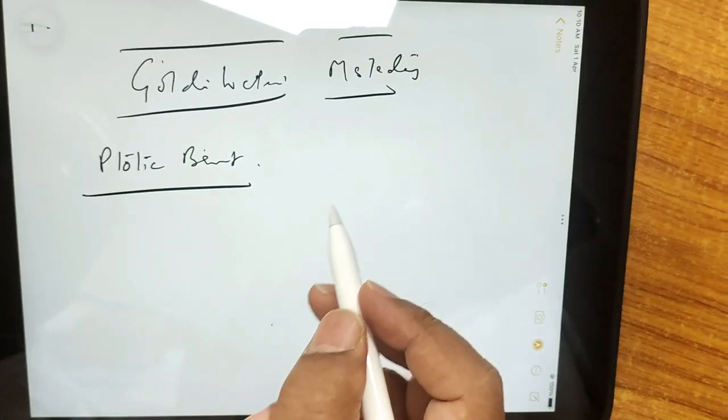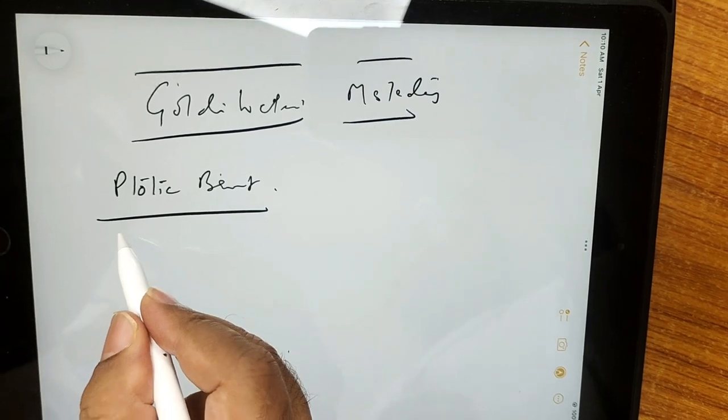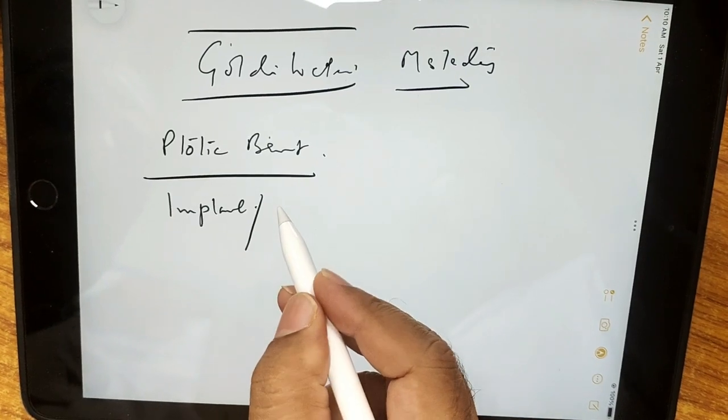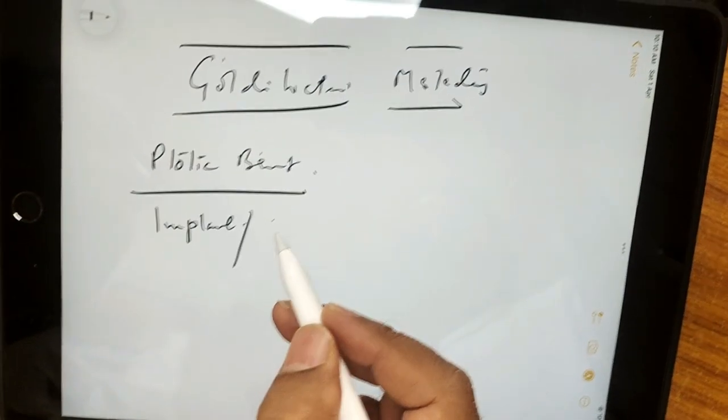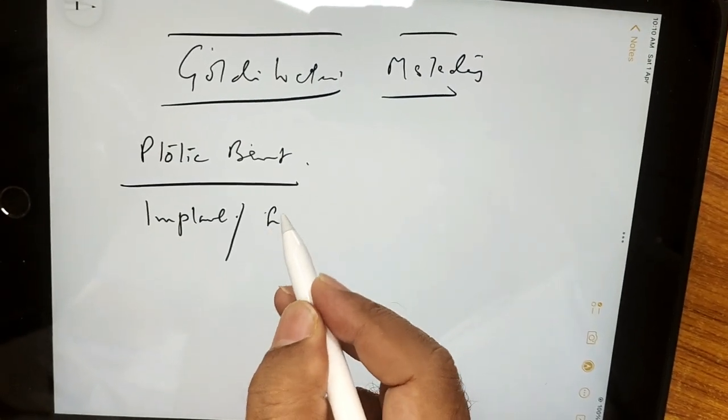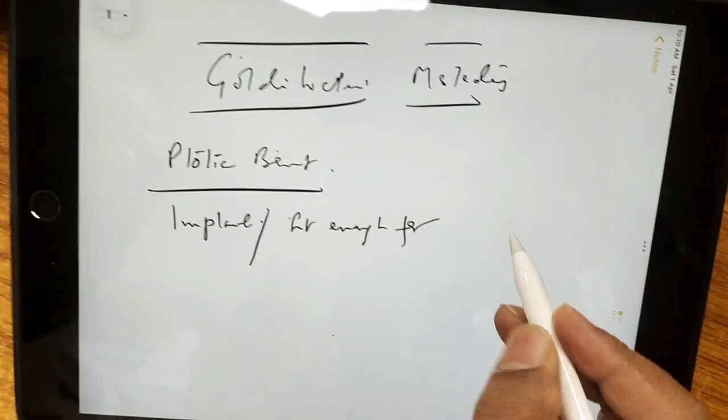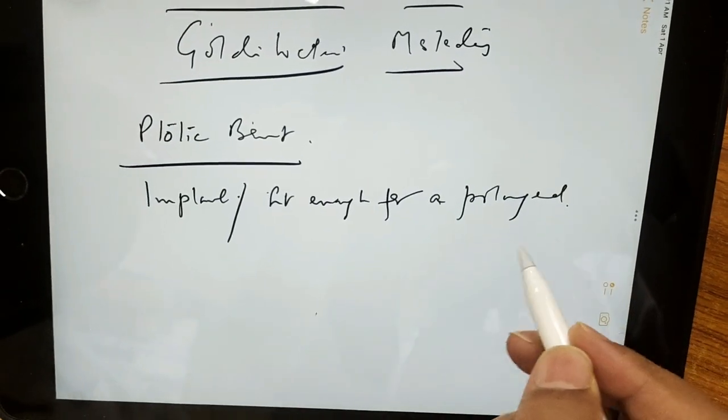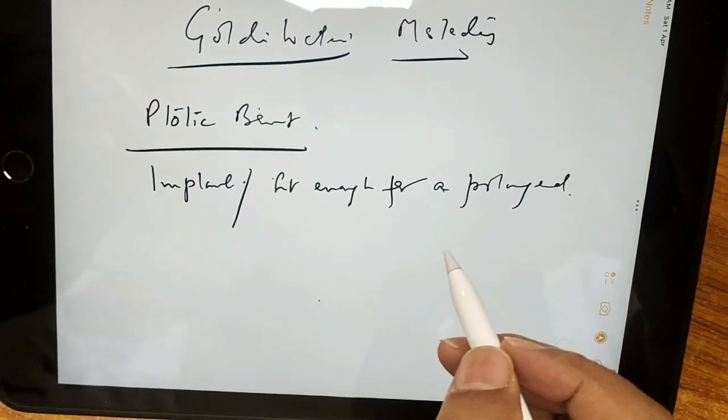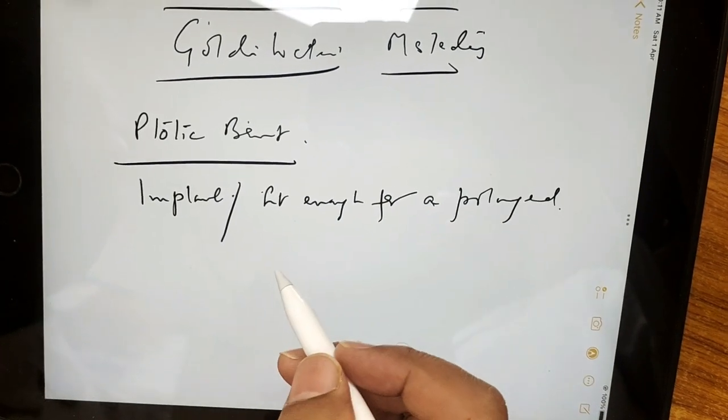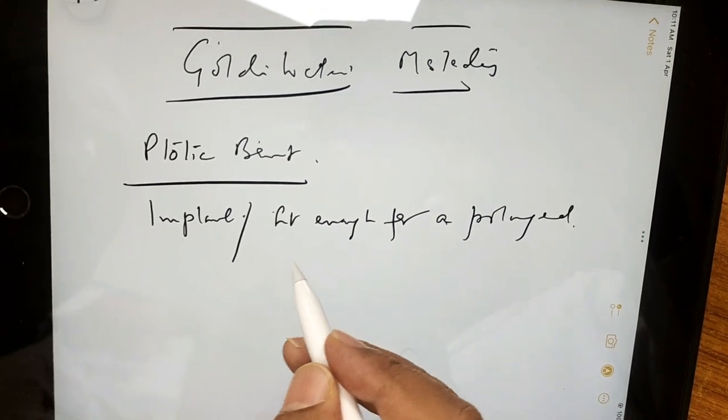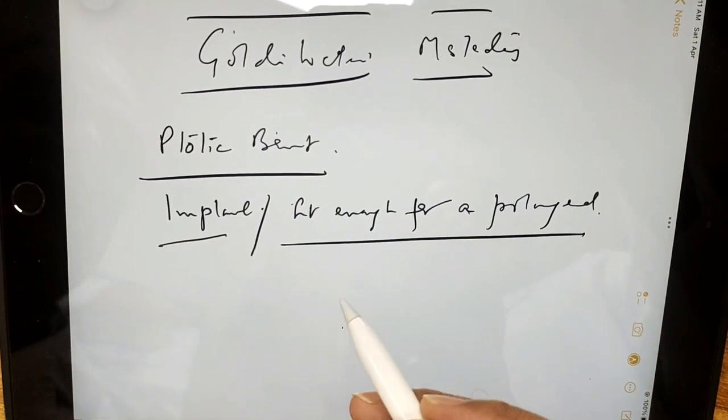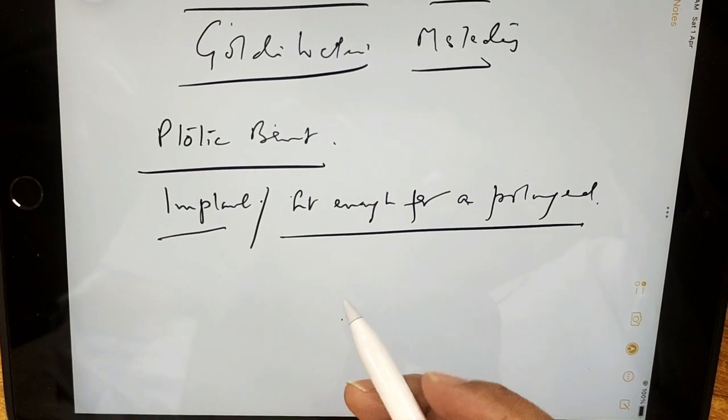Ptotic breast, right? And if the patient cannot afford an implant or is not fit enough for a prolonged procedure like autologous flaps and pedicle suction, prolonged ones like free flap. Implant can't afford, this you don't want, or otherwise also if the patient is not too keen on a very extensive work.